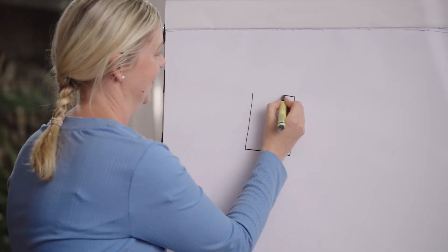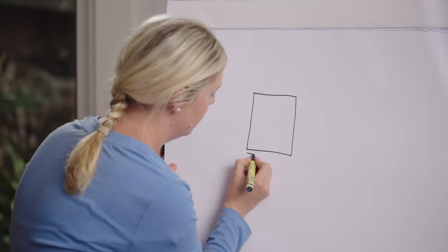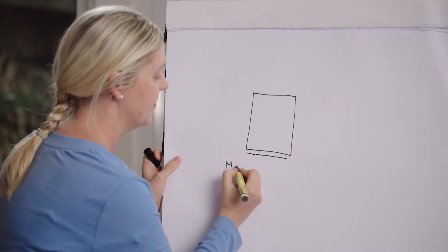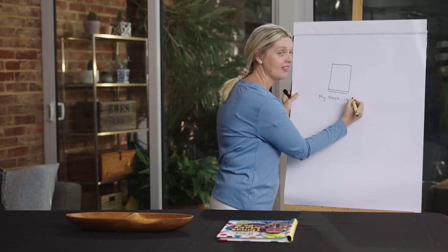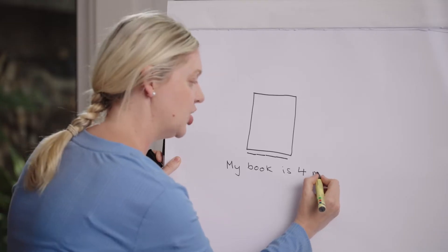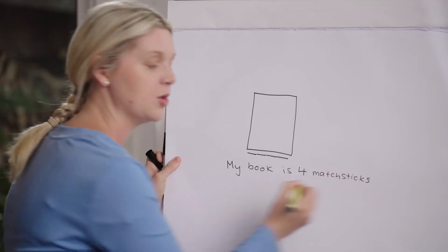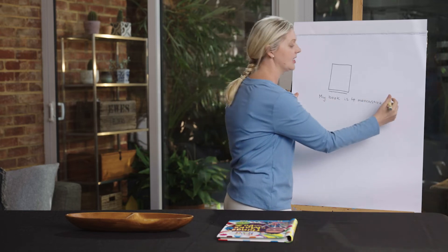Let's record this. I'm going to draw my book, then draw the match sticks carefully lined up — one, two, three, four. Now I'm going to write a sentence: my book is four — that was our total — four match sticks — that was my unit of measure. And what kind of long did we measure? The width, or how wide. My book is four match sticks wide.